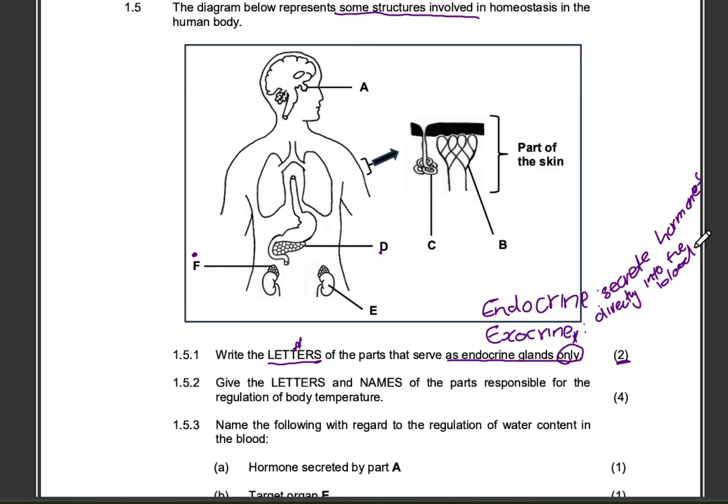But when we talk about exocrine glands, these are glands that will secrete substances through ducts. Whatever substance that is secreted, it will travel through a duct, through a pipe, to whatever target organ or structure that it needs to go to. The question is asking us for the parts that serve as endocrine glands only.